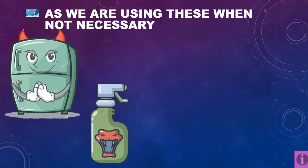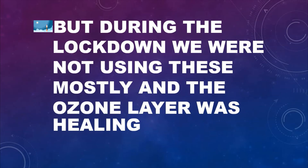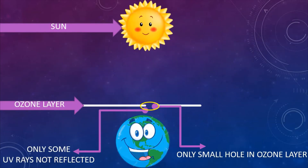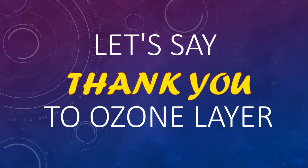Because we are using these things even when not necessary, it is causing ozone layer depletion. Another fun fact: during lockdown, the factories were not open and vehicles were not running, so the ozone layer is healing! Now you can see only a small hole compared to the big hole we saw before. So this is the time we can say thank you to the ozone layer. Bye, and don't forget we got the answers to our questions!